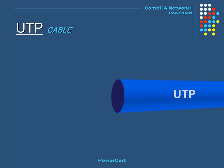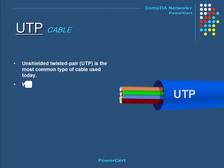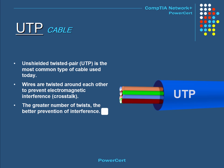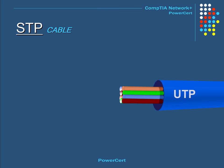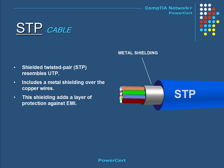Unshielded Twisted Pair (UTP) is by far the most common type of cable used today. It consists of four pairs of unshielded wires twisted around each other. The wires are twisted to prevent electromagnetic interference or crosstalk. This type of cabling is mainly used on local area networks. Shielded Twisted Pair (STP) is very similar to UTP, except it has a foil shield that covers the wires, adding a layer of protection against electromagnetic interference leaking into or out of the cable.